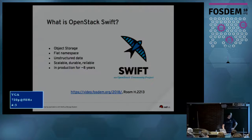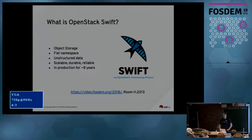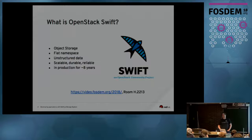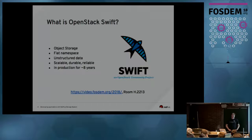Swift has been in production for more than eight years now. It's actually one of the founding projects within OpenStack. It was originally developed at Rackspace, and some Swift clusters have been running for that same amount of time. There are known Swift clusters with more than 75 petabytes of storage within a single cluster.